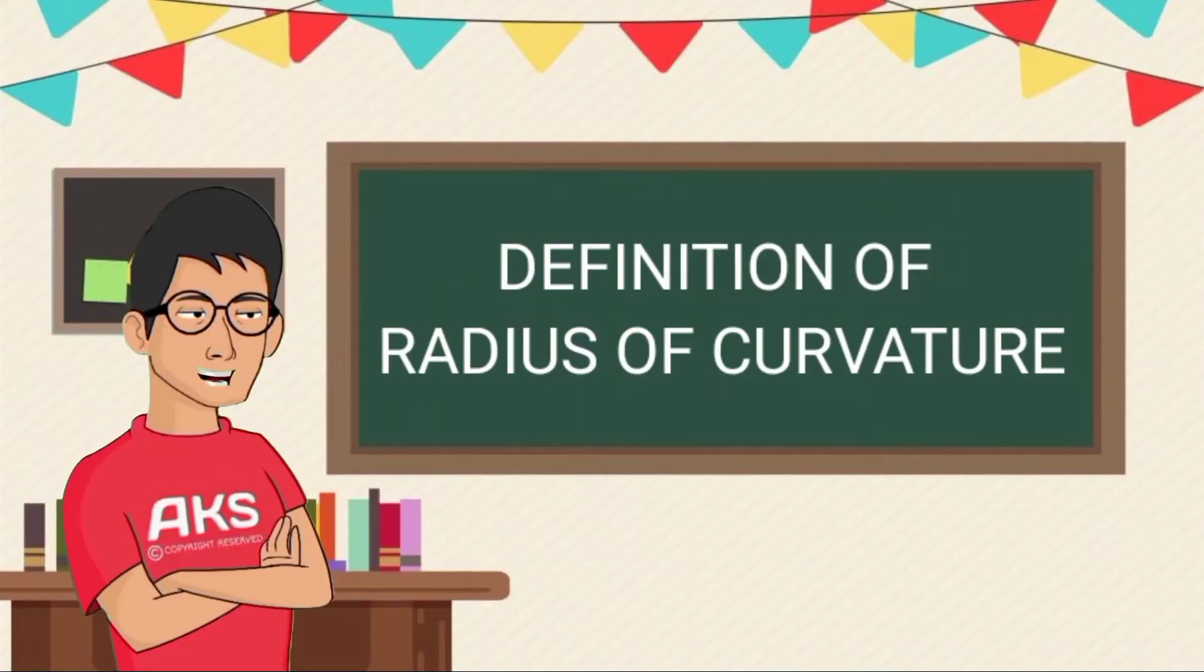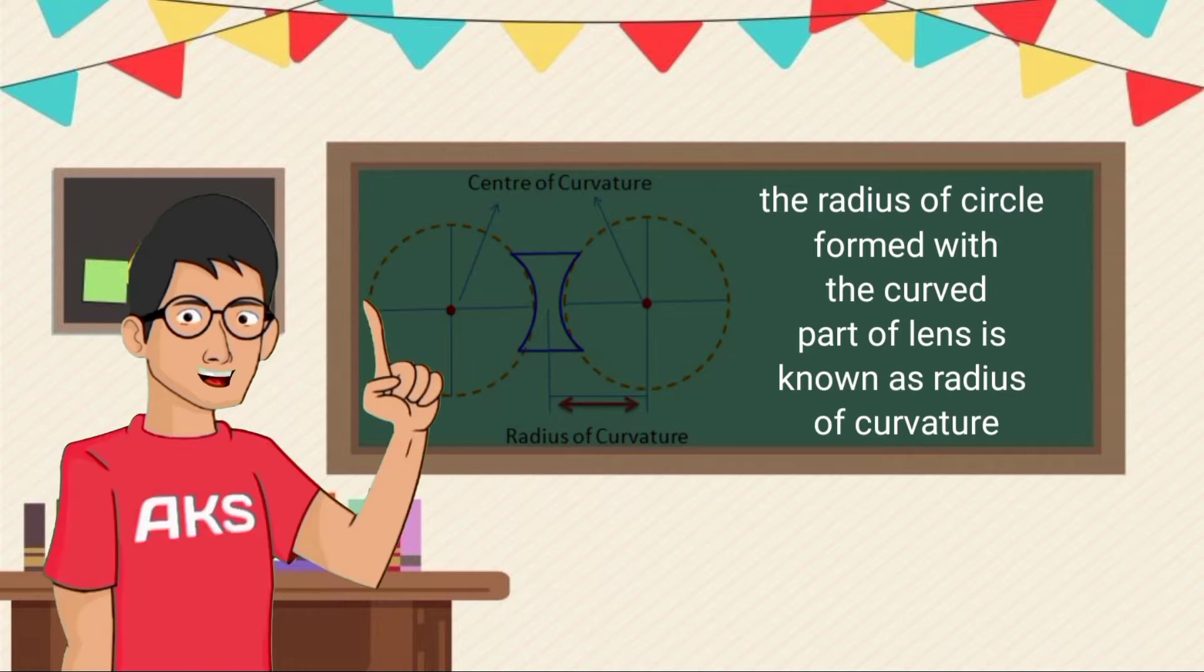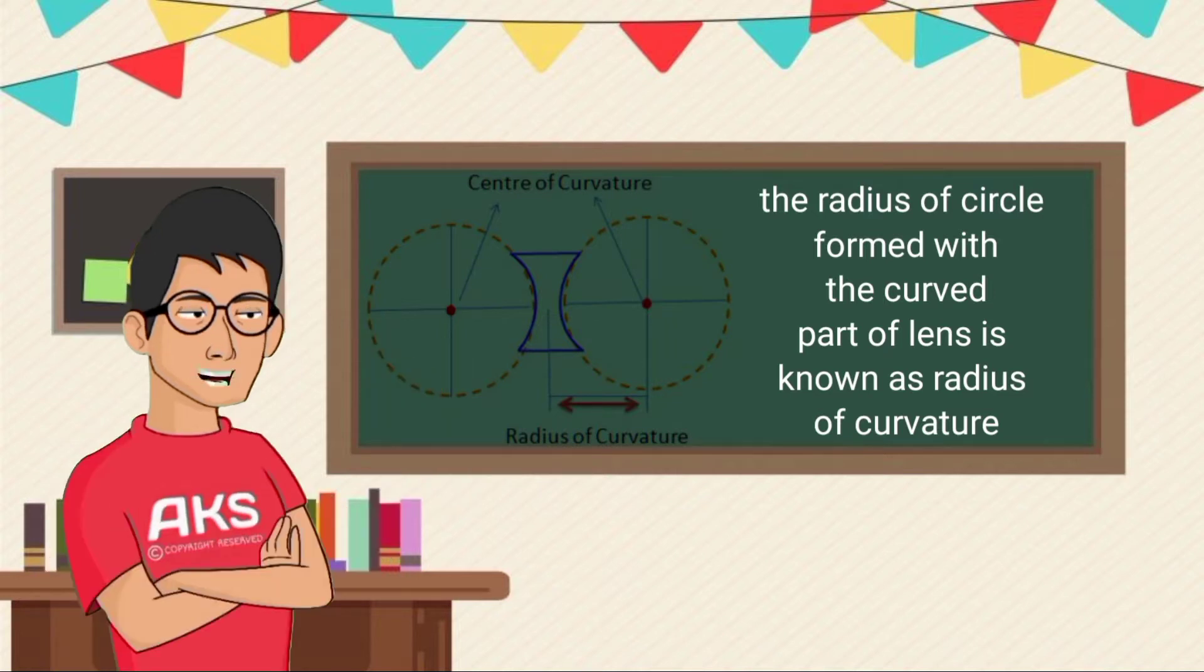Definition of radius of curvature. The radius of circle formed with the curved part of lens is known as radius of curvature.